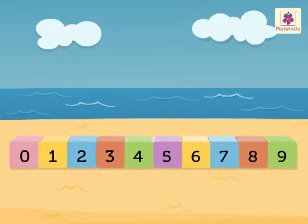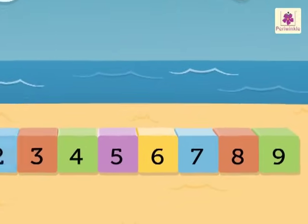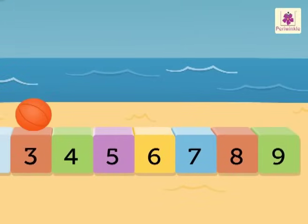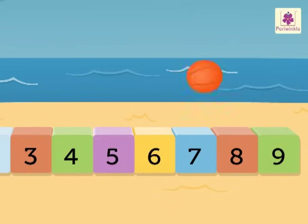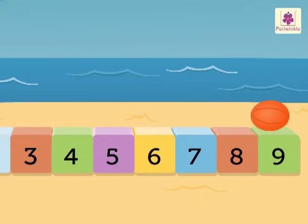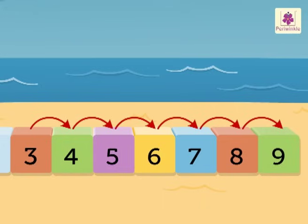Let's count forward the numbers from 3: 4, 5, 6, 7, 8, 9. All these are numbers after 3.